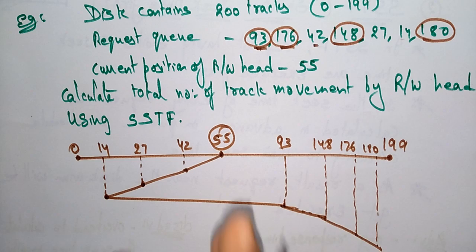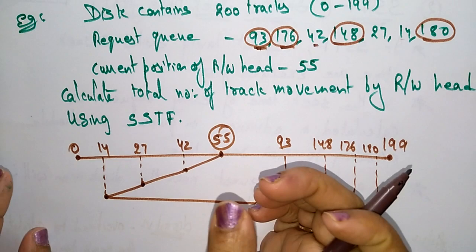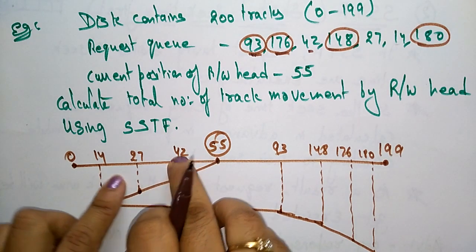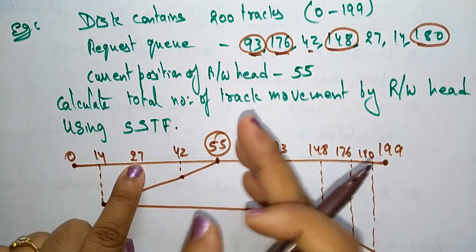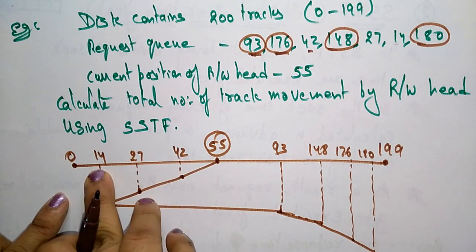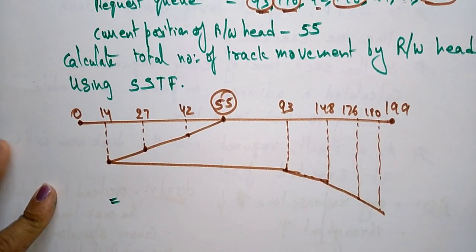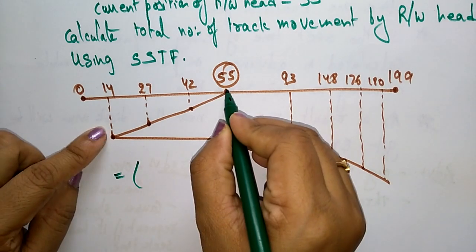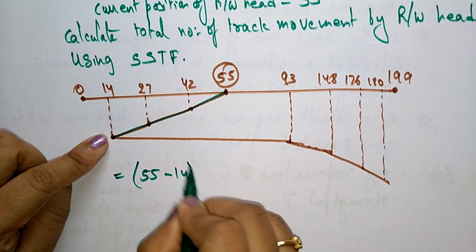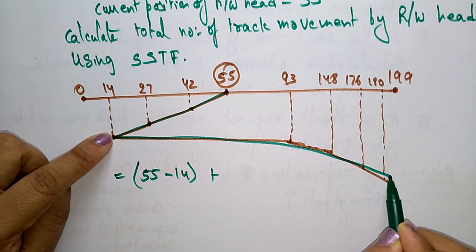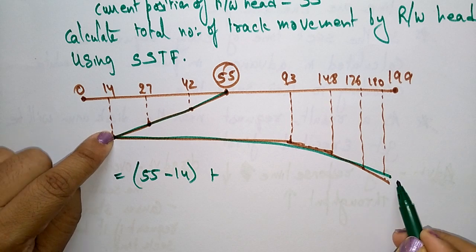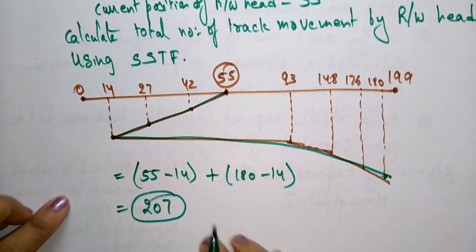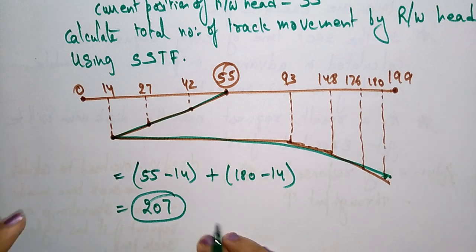This is how Shortest Seek Time First works — we look at the shortest time, not the smallest track number. From 55, one direction: 55 minus 14. Then changing direction from 14 to 180: 180 minus 14. The total number of track movements by the read/write head using Shortest Seek Time First is 207. Thank you.